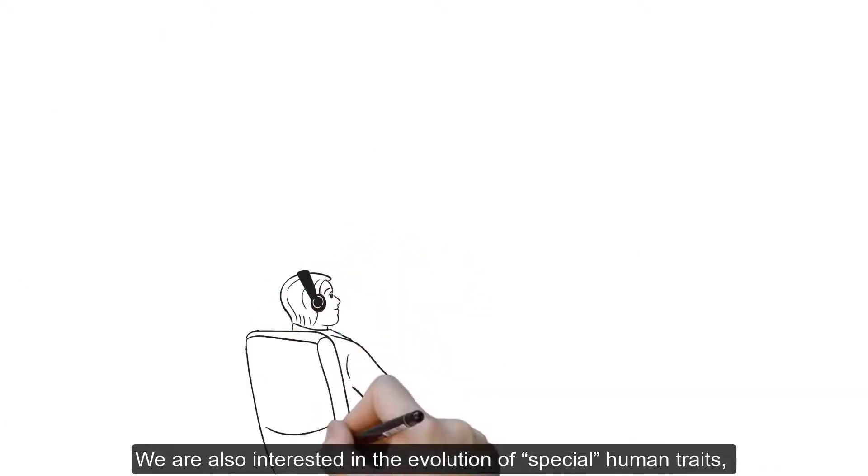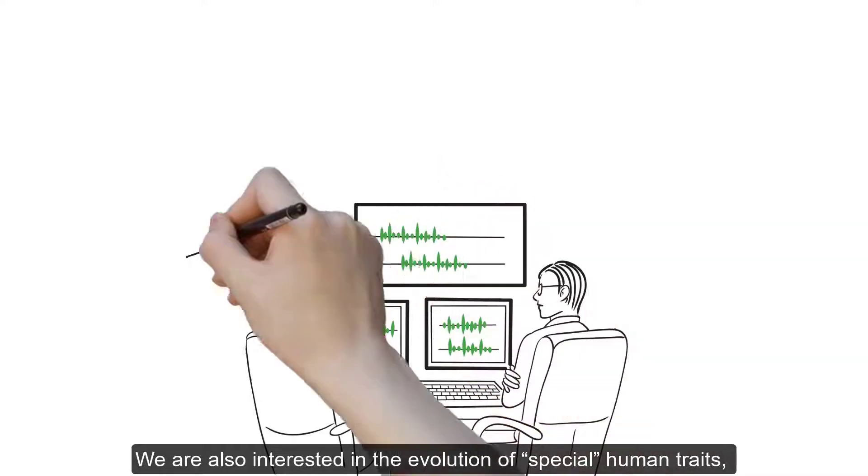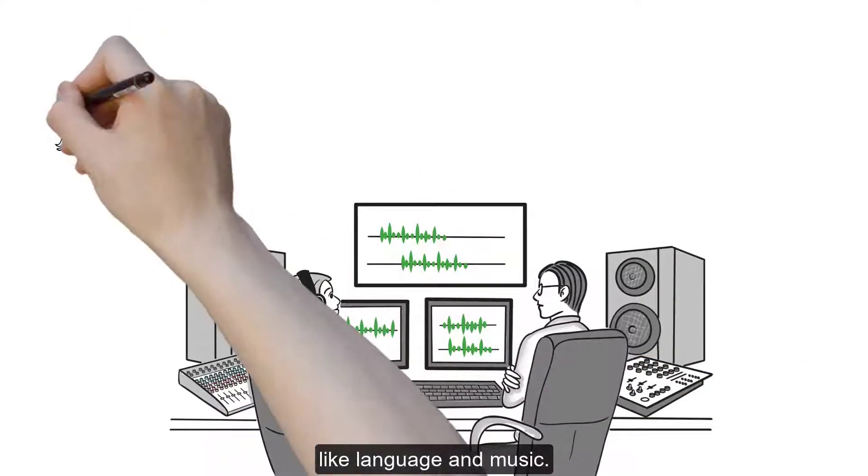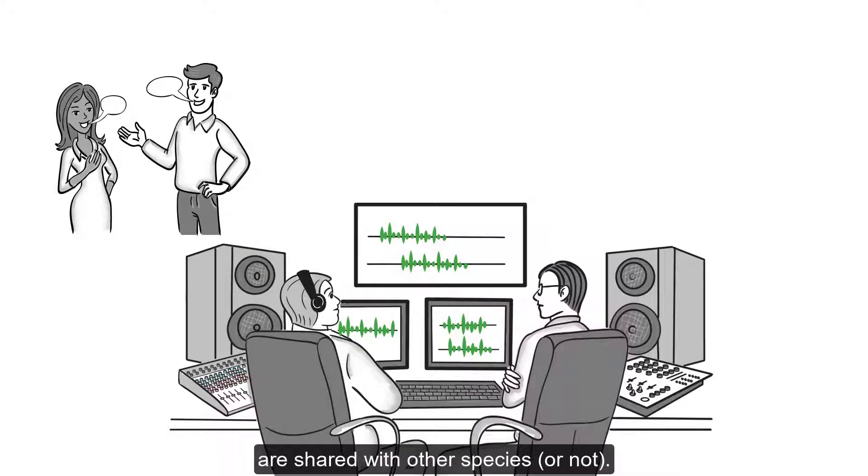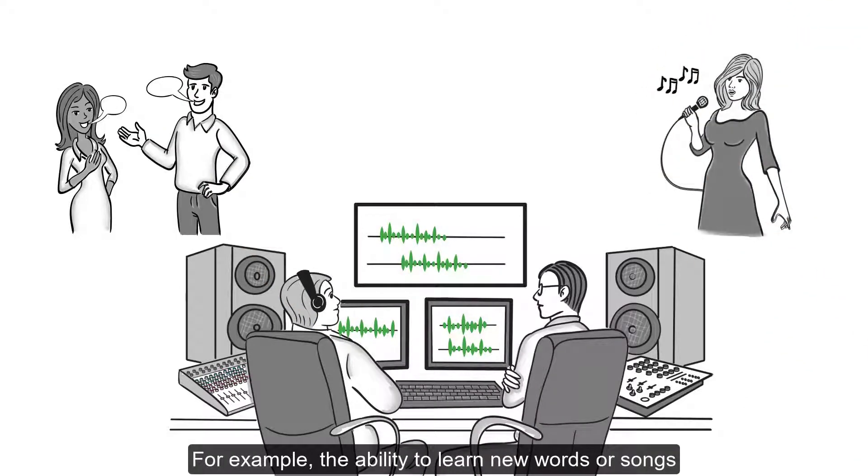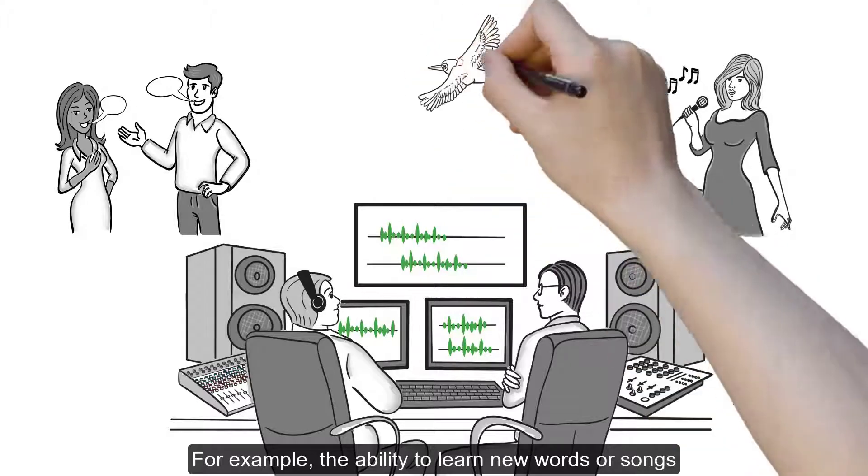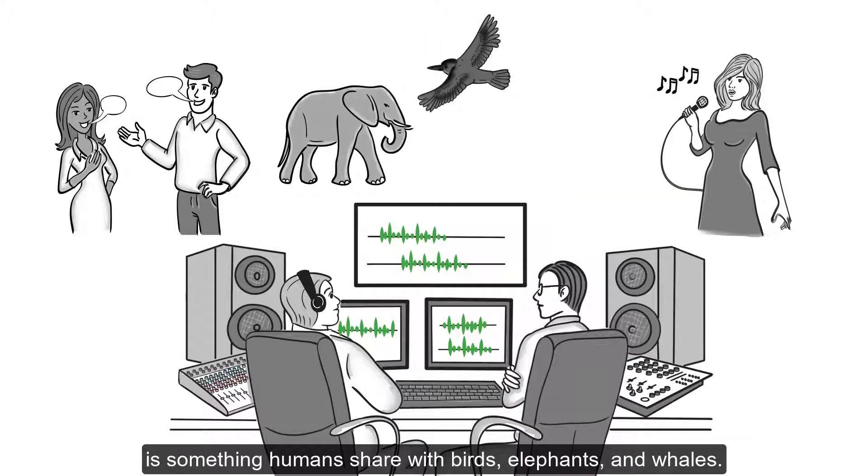We are also interested in the evolution of special human traits like language and music. We try to understand what aspects of these abilities are shared with other species, or not. For example, the ability to learn new words or songs is something humans share with birds, elephants, and whales.